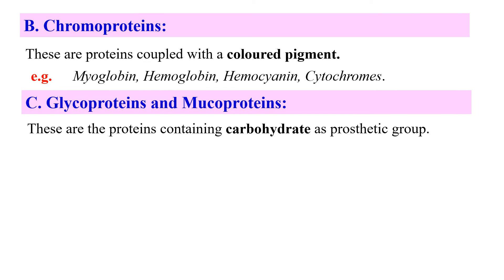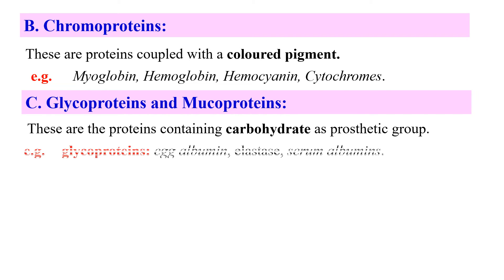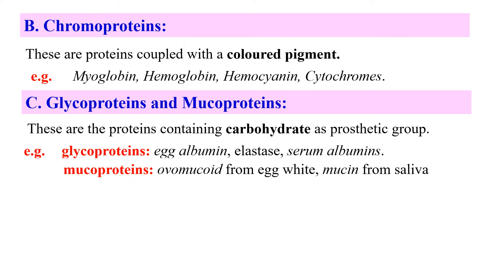Next, glycoproteins or mucoproteins. Glyco means carbohydrates, so these are proteins whose prosthetic group consists of carbohydrates. Glycoproteins contain a small amount of carbohydrates, while mucoproteins contain a high amount of carbohydrates. Examples of glycoproteins include egg albumin, elastase, and serum albumins. Mucoproteins include ovomucoid from egg white and mucin from saliva.